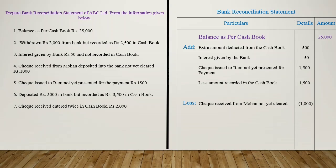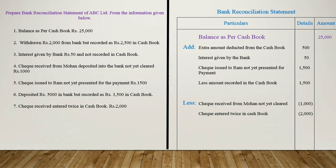The seventh and last transaction is: check received, entered twice in Cash Book: Rs. 2000. When we receive a check, it increases the balance of both Passbook and Cash Book. But here, we have added the amount in Cash Book two times. Therefore, we have to deduct Rs. 2000 from the Cash Book to make the balances of both books equal. Therefore, less check entered twice in Cash Book: Rs. 2000.